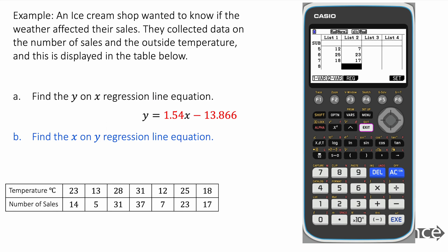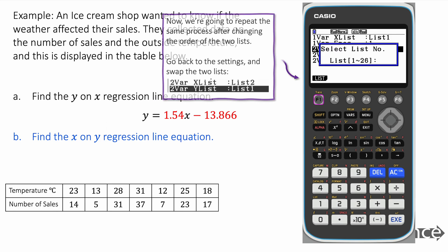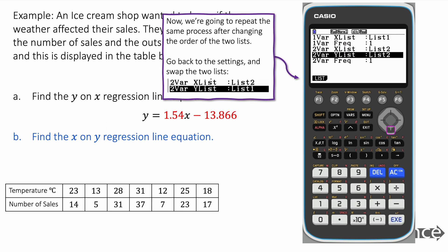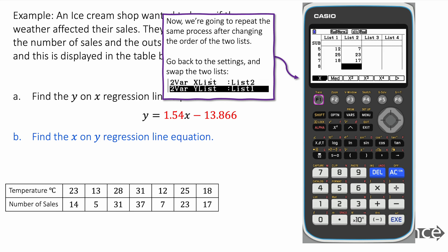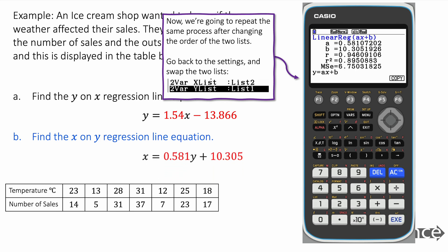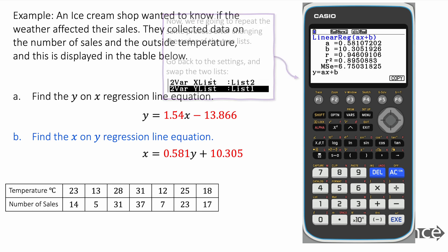Now to find the x on y regression line we're just going to go backwards and change our settings from before. We're going to change our lists to x list being list two and our y list being list one and we change that. We go back into regression now and it changes our regression line to have a different a value and a different b value and this is what we get. We get x equals 0.581y plus 10.305. So we found our two regression lines there.